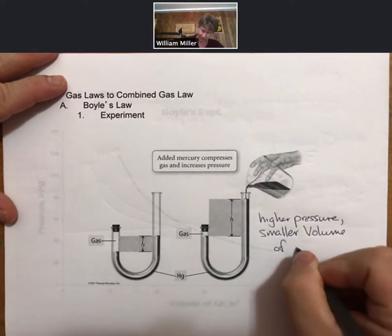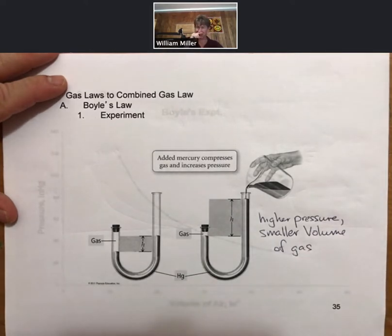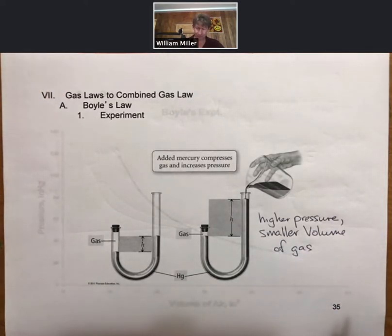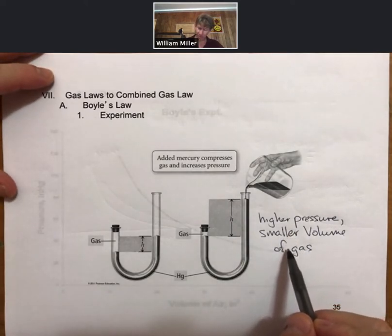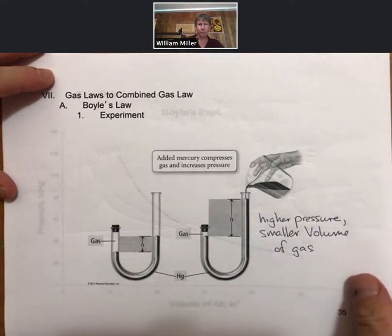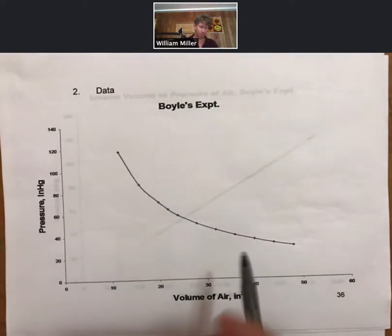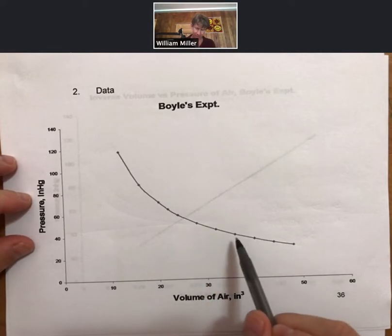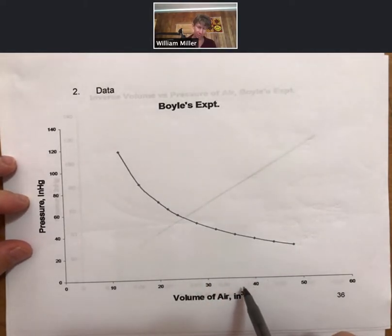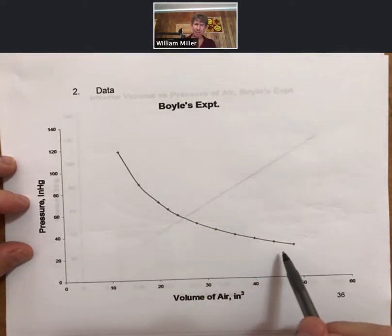Just to be specific, that is a smaller volume of gas. This doesn't work with liquids or solids. So higher pressure, smaller volume of gas. We could do an experiment with several different amounts of pressure, then measure the volume in the container, and we would find a relationship that looks like this.